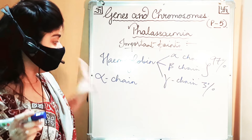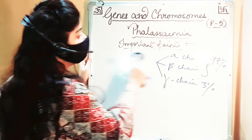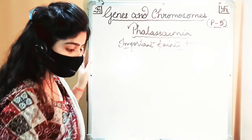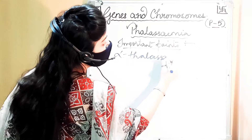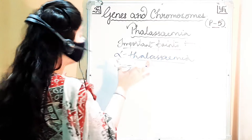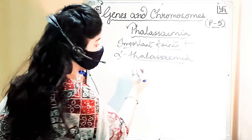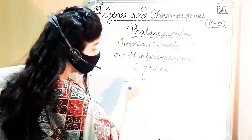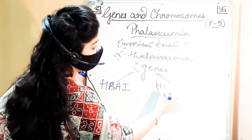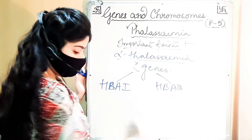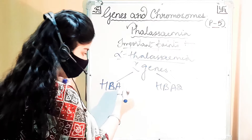Alpha thalassemia is controlled by two genes: HbA1 and HbA2 — that is, hemoglobin alpha 1 and hemoglobin alpha 2. Since there are two genes, that equals four alleles, because one gene equals two alleles.